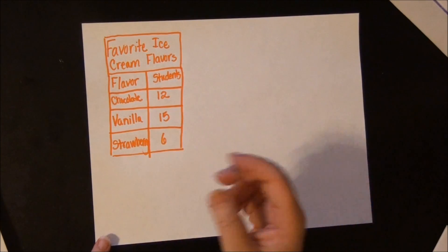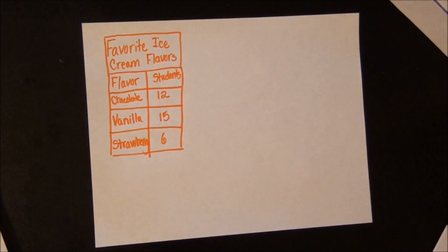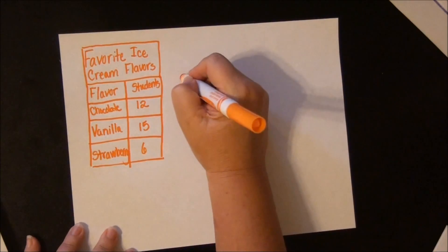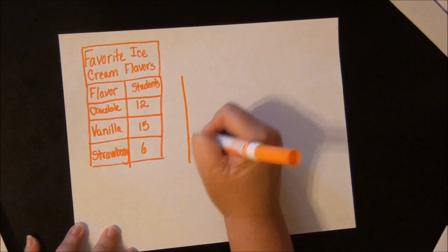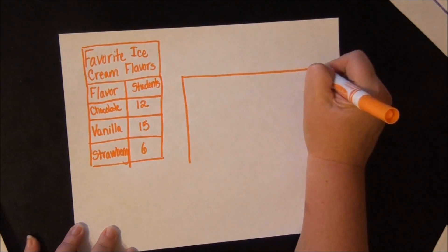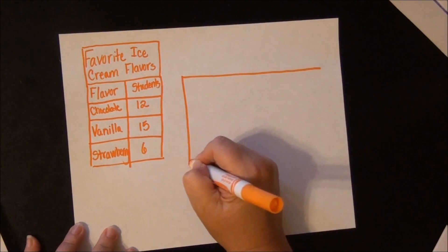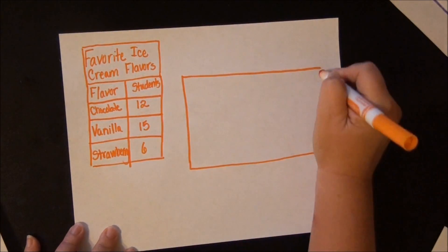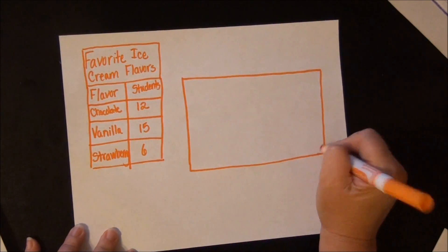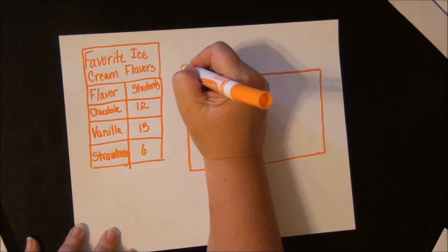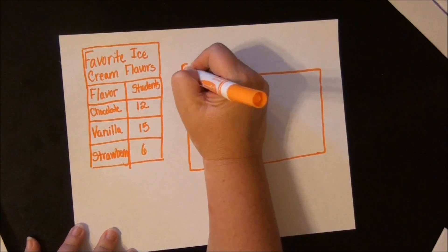So now we're going to create our picture graph. I'm going to draw a table kind of similar to this one. I'm going to draw it horizontally — it can go vertically. And I'm going to give it a title: Favorite Ice Cream Flavors.